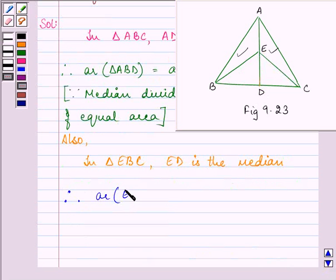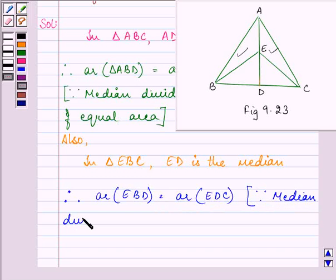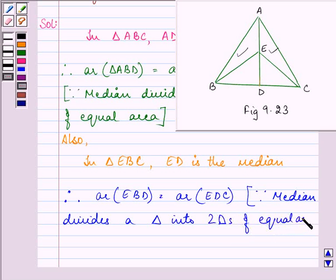area of EBD will be equal to area of EDC because of the same reason—because a median divides a triangle into two triangles of equal area. Let this be the second equation.